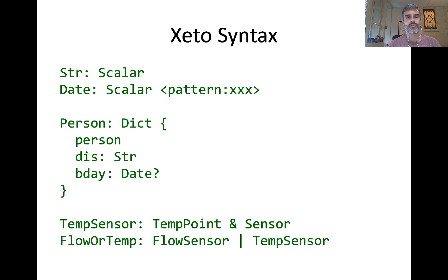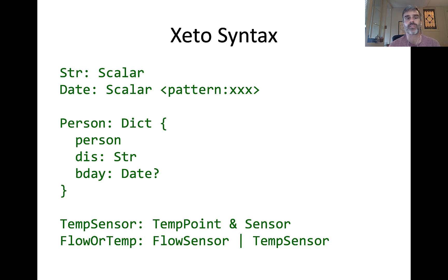This is a very quick overview of the syntax for ZETO. You can see here what the string and the date declarations look like. It's basically type name, colon, base type. For scalars, you can add a regex pattern. If you look at the source code, there's a regex for date and time and date time, etc. We can also see a simple example of creating structured dictionaries. I've created a new type called person, deriving from dictionary. Between the curly braces are the tags, fields, and slots required on that dictionary. In this case, there's a required marker tag called person, a required tag called display which must be of type string, and an optional birthdate of type date. The question mark is the maybe type — that means it's optional, but if it's there, it must be of type date.